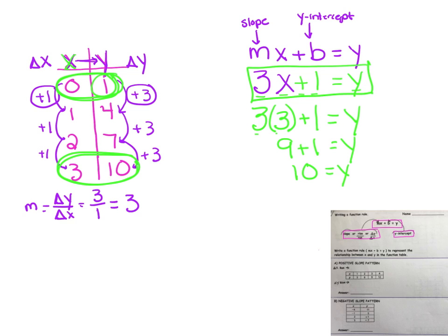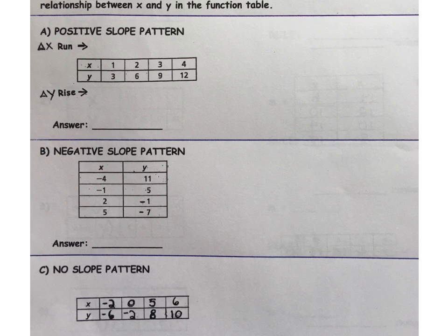Now, we're not always going to be given the Y intercept in the table. We're going to have to dig a little bit. Let's go back to page 10. Take a look at the horizontal table given to us in letter A. Here, we're given a positive slope. Check it out. We know we have to write the equation MX plus B equals Y.